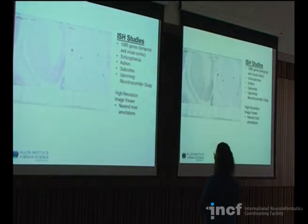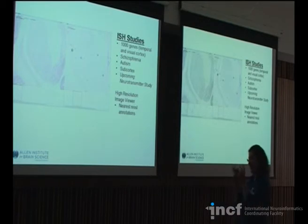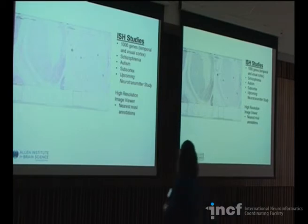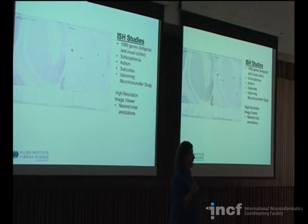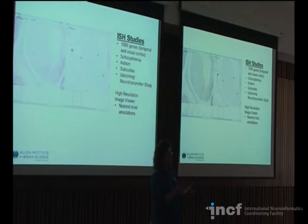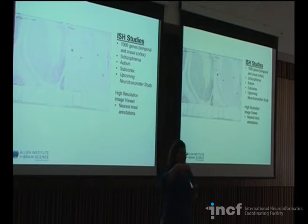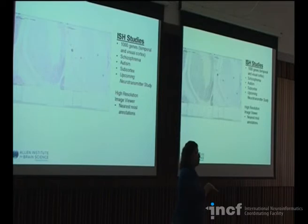With microarray, you start off with a very small amount of tissue. The tissue is lysed, the RNA is extracted and purified, and it's put onto slides where the probes — instead of going on the tissue — are sitting on the slide. You're taking your sample and putting it on the slide; it binds to those probes which are linked to fluorescence, and then you excite the slide.